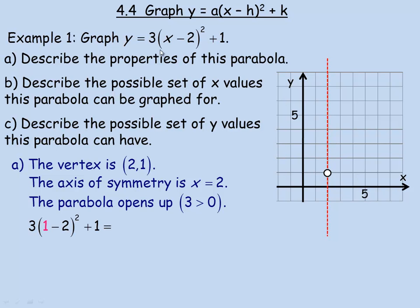In the equation, I'm going to substitute 1 in place of x. So 1 minus 2 is negative 1; if you square that you get 1. And 1 times 3 is 3, plus the 1 on the end, so 3 plus 1 gives you 4. That's the y-coordinate when x is 1, so that's the point (1, 4). We can plot that on the graph.